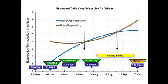On the bottom axis, we have the days after planting. We are assuming that we plant on the 20th of May, and if the wheat takes 140 days to mature, that'll mature then on the 7th of October.